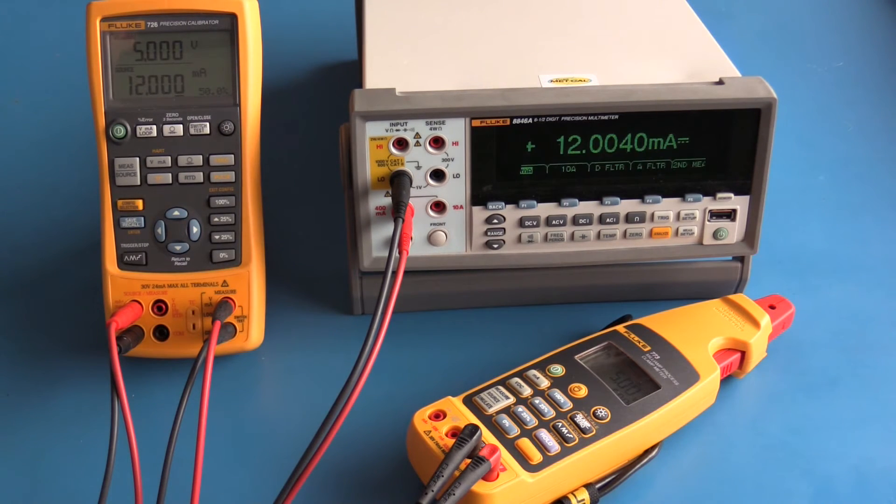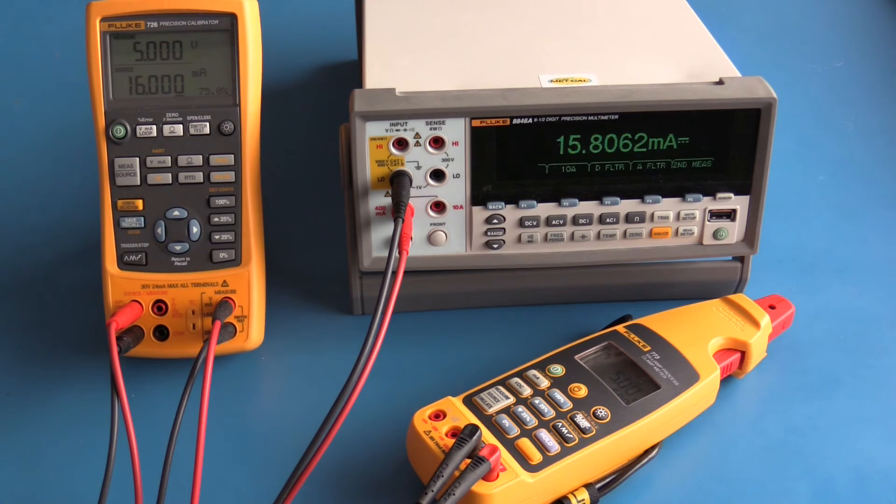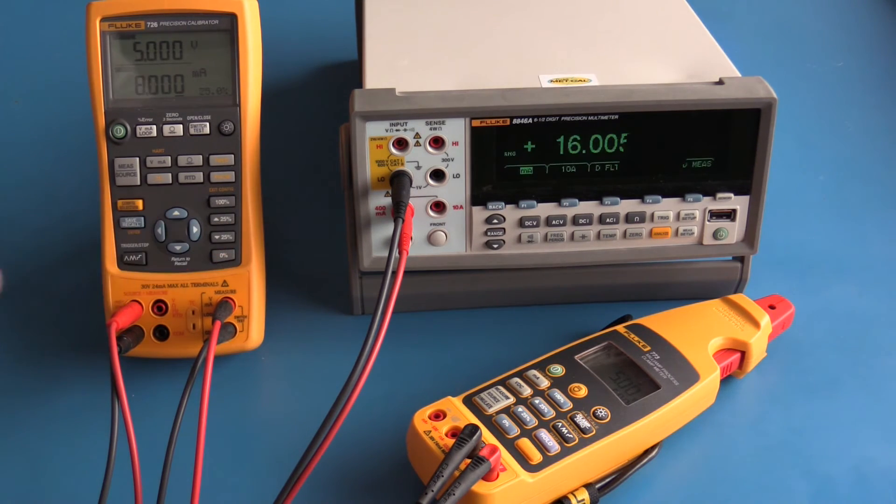The milliamp range on the Fluke 726 is 0 to 24 milliamps, currently at the 50% value which is 12 milliamps. I can go up and down in 25% increments. That's 16 milliamps, and that's 8 milliamps. It is close to what the Fluke 8846a is measuring.